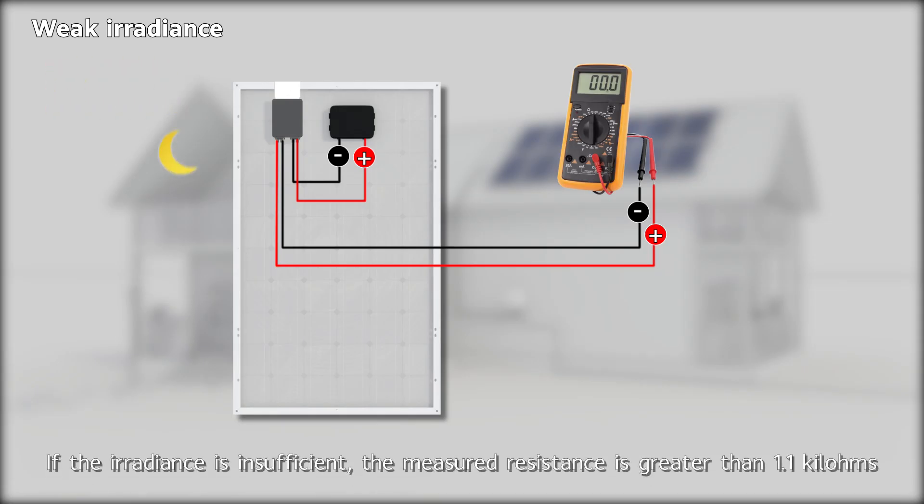If the irradiance is insufficient, the measured resistance is greater than 1.1 kilohms.